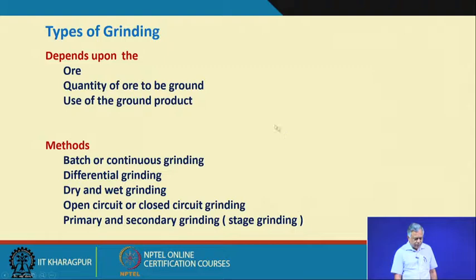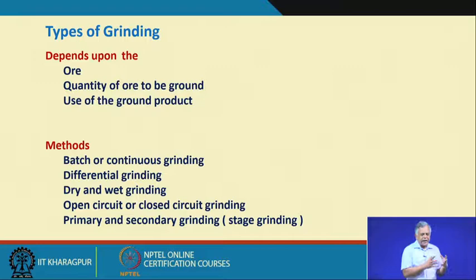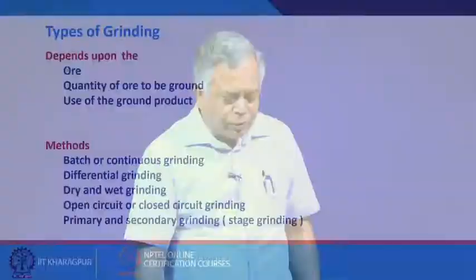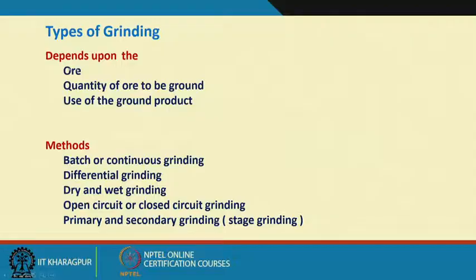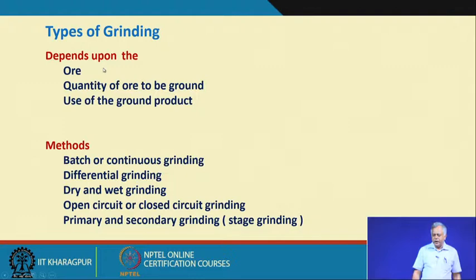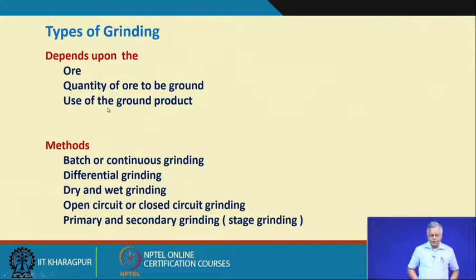What are the types of grinding? Whether we use wet grinding or dry grinding, batch or continuous grinding, or differential grinding — where we want to preferentially grind only the softer materials from an agglomerate of hard and soft materials. This depends on the ore's material characteristics, the quantity of ore to be ground per unit time, and what the ground product will be used for.